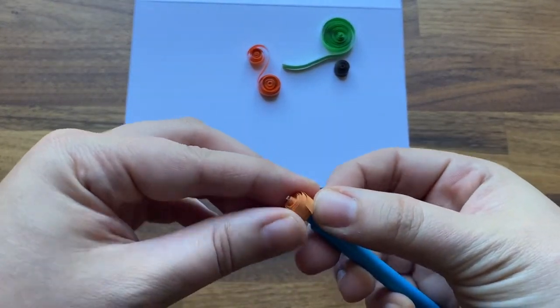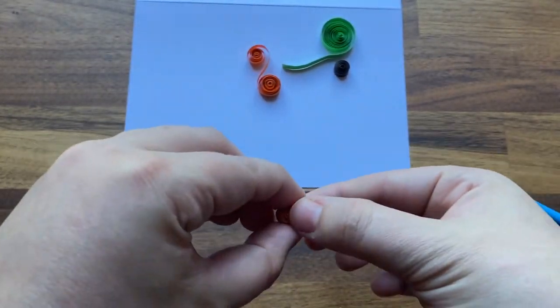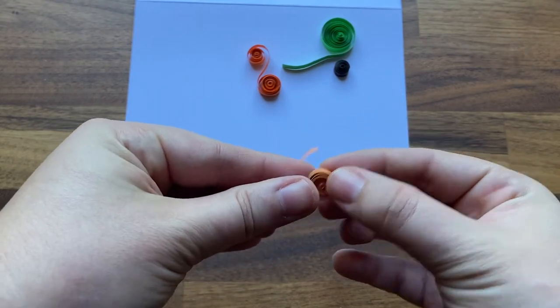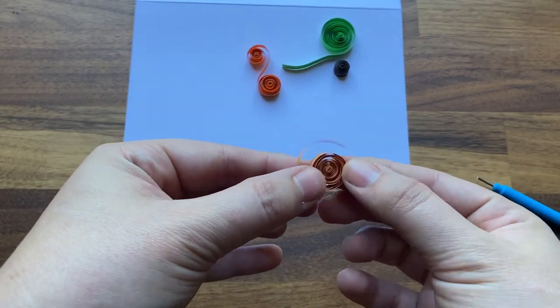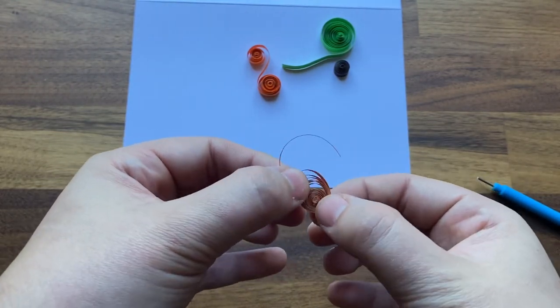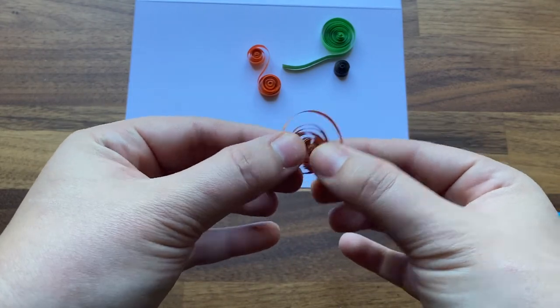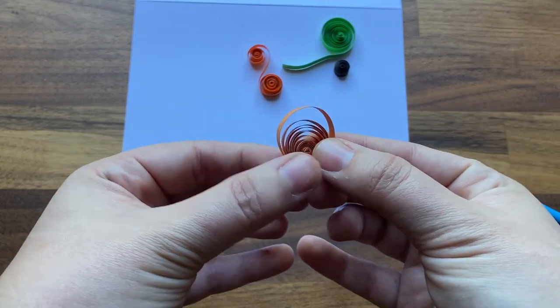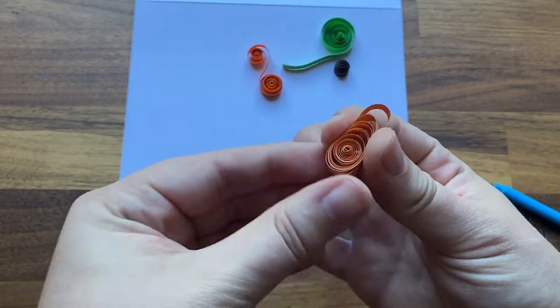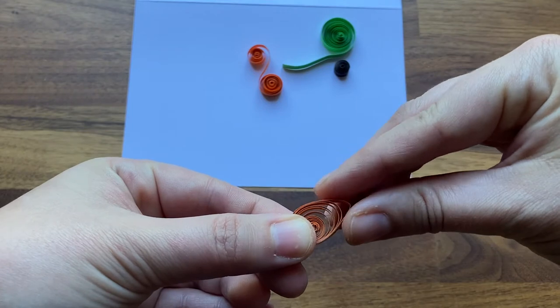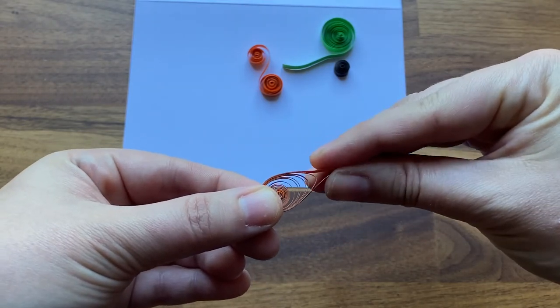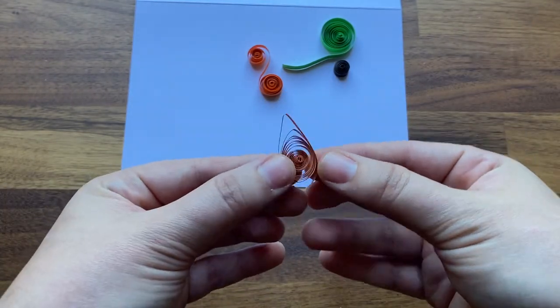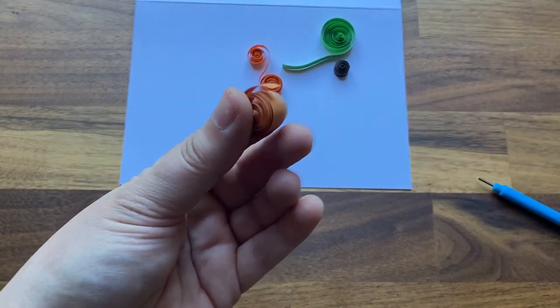Another option is a teardrop shape. First, remove the unglued coil from your quilling tool. Loosen the shape with your fingers into a spiral. Then pinch one end to make a point. You could also use this same process except pinch both ends to create what is called a marquee's shape.